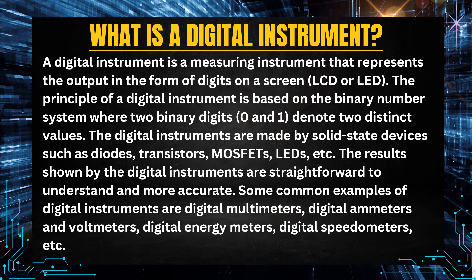What is a digital instrument? A digital instrument is a measuring instrument that represents the output in the form of digits on a screen — LCD or LED. The principle is based on the binary number system, where two binary digits, 0 and 1, denote two distinct values. Digital instruments are made by solid-state devices such as diodes, transistors, MOSFETs, and LEDs. Results shown are straightforward to understand and more accurate. Common examples include digital multimeters, digital ammeters and voltmeters, digital energy meters, and digital speedometers.